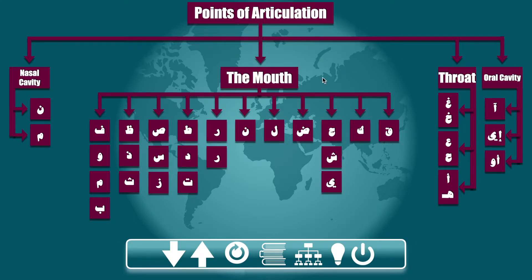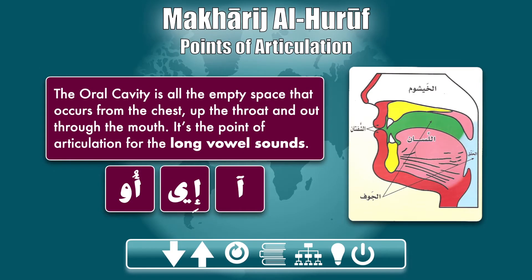Moving on, for our oral cavity points of articulation, we have three main sounds here — not three main letters, but three main sounds coming from the oral cavity. The oral cavity is the empty space that spreads and stretches from the reader's chest up to the throat and out through the mouth.